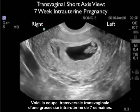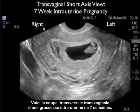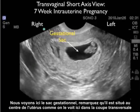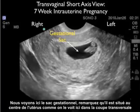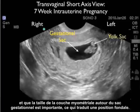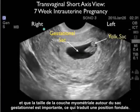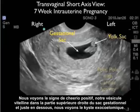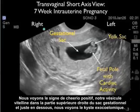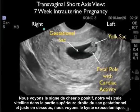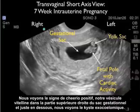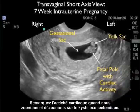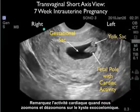Here's a transvaginal short axis view of a 7-week intrauterine pregnancy. We see the gestational sac located in the center of the uterus with a good amount of myometrial mantle surrounding it, signifying a fundal location. We see the positive cheerio sign or yolk sac to the upper right aspect of the gestational sac, and right below we see the fetal pole stretched out with positive cardiac activity as we scan back and forth through it.